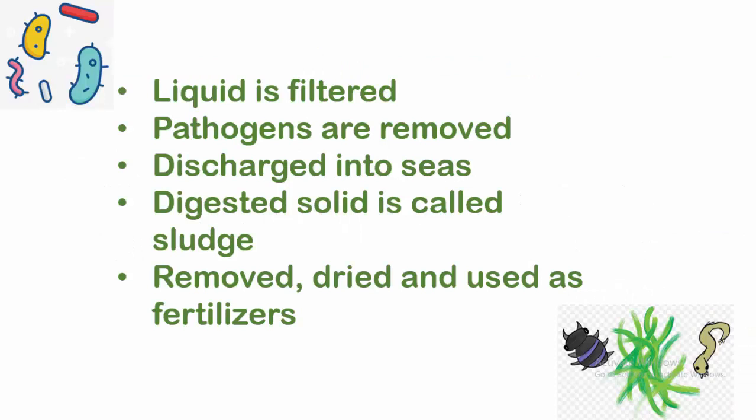The liquid produced during digestion is filtered, pathogens are removed from that liquid and it is discharged. The digestive solid is called sludge; that sludge is removed, dried, and used as fertilizer.